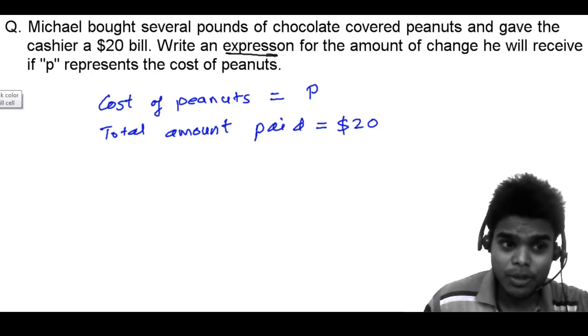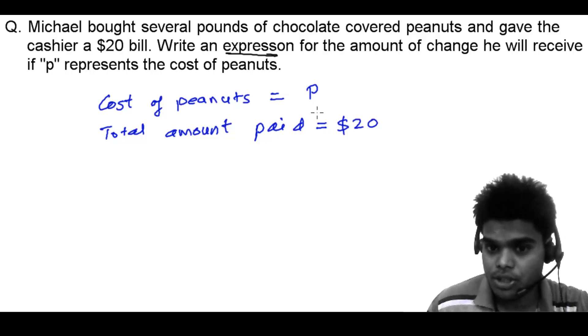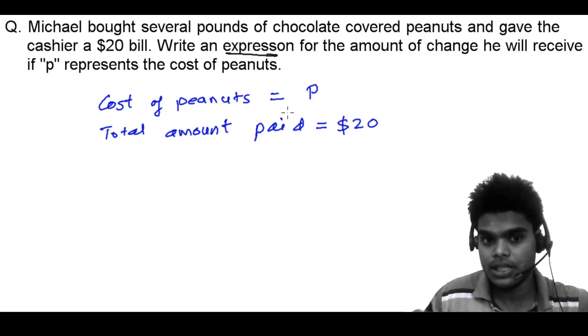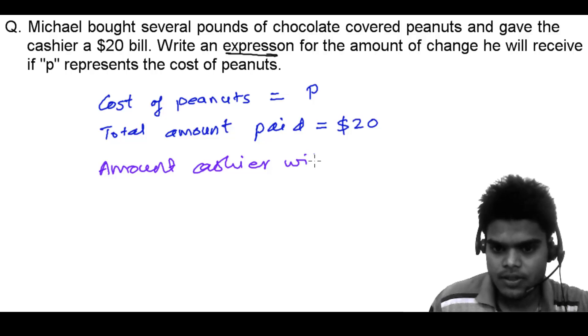So how much? That we need to find out. Simply the difference of these two is going to give us the amount what Michael should receive from the cashier. So amount cashier will return is what?